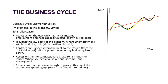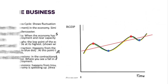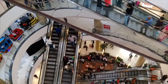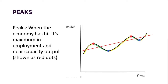When we're looking at this cycle, there are different points we need to look at. The first one being a peak, indicated by the red dots on the cycle. That's when the economy has hit a maximum in employment and near-capacity output, meaning a lot of people are working and spending money. Inflation or price levels are going to start to increase. If we look at a long-run aggregate supply curve, we would be in an inflationary period, meaning price levels increasing.